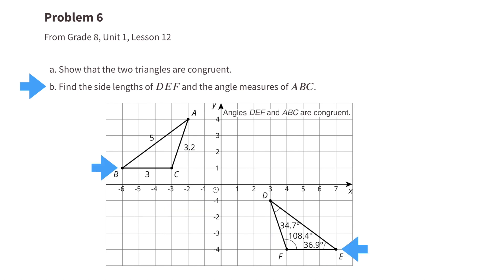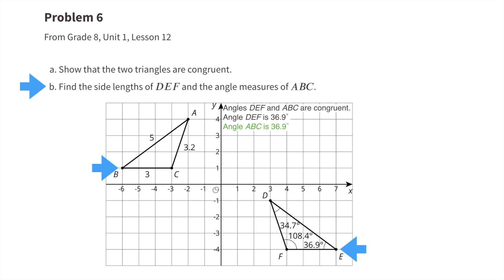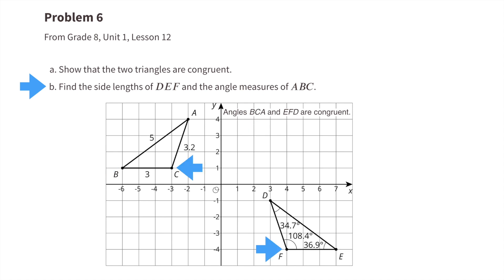Angles DEF and ABC are congruent. Angle DEF is 36.9 degrees, so angle ABC would also be 36.9 degrees. Angles BCA and EFD are also congruent. Since angle EFD is 108.4 degrees, angle BCA would also be 108.4 degrees.